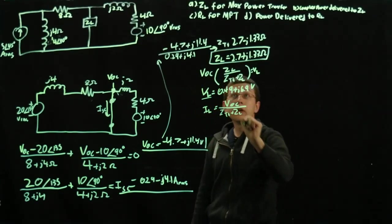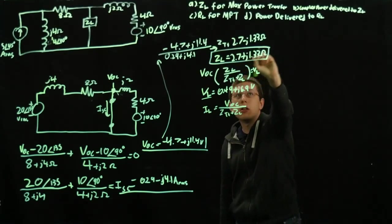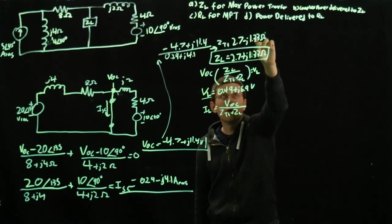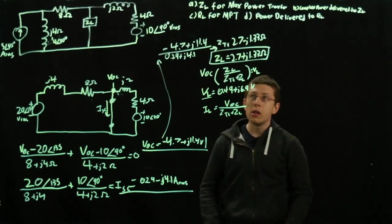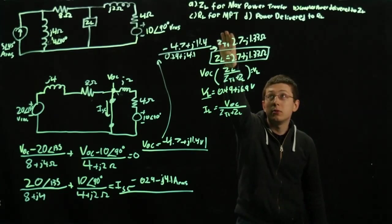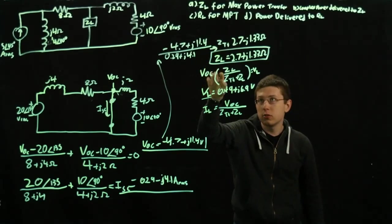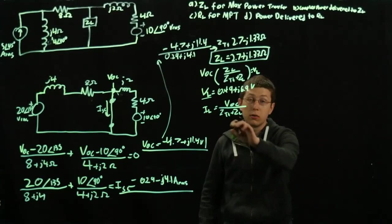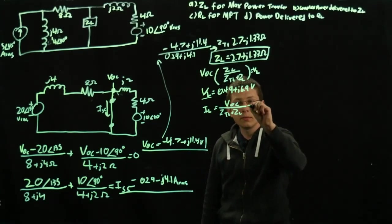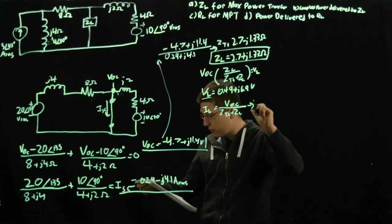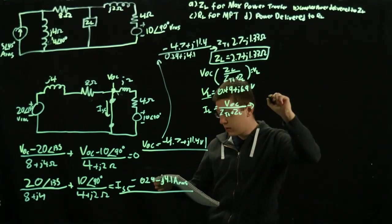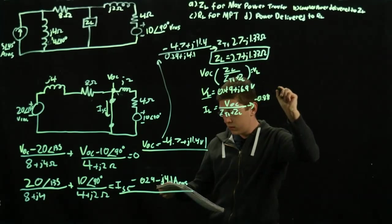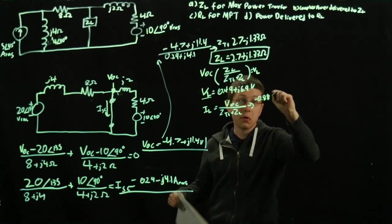Now what you'll notice is because Z Thevenin and ZL are complex conjugates, when summed up the imaginaries will cancel out. So it'll just be 2.7 times 2. Really this will be VOC over 5.4 ohms. Here we get for our IL is negative 0.88 plus J2.1 amps.